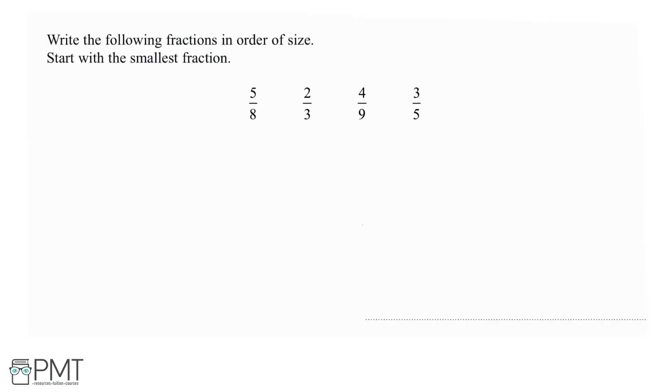Write the following fractions in order of size, starting with the smallest fraction. It's quite hard to tell which is smaller and which is bigger just by looking at the fractions. However, it's much easier for us to compare them if we convert them into another form, so we can convert them into decimals or percentages.